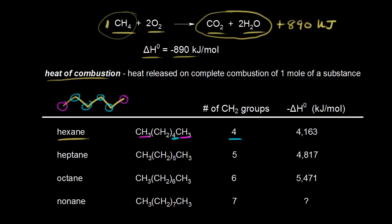Here we have the heat of combustion. We're going to talk about the heat of combustion as the negative change in the enthalpy — negative delta H zero in terms of kilojoules per mole — which gives us a positive value. So for hexane, it's 4,163 kilojoules for every one mole of hexane that we combust.